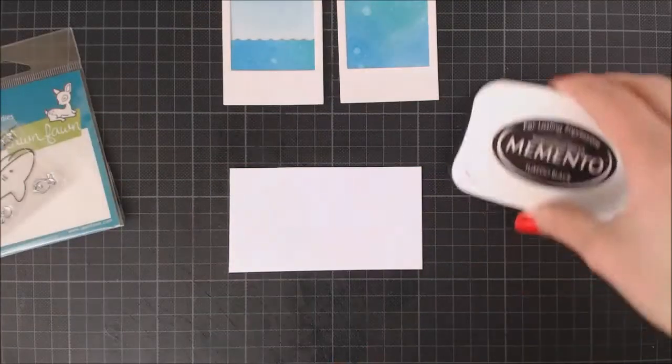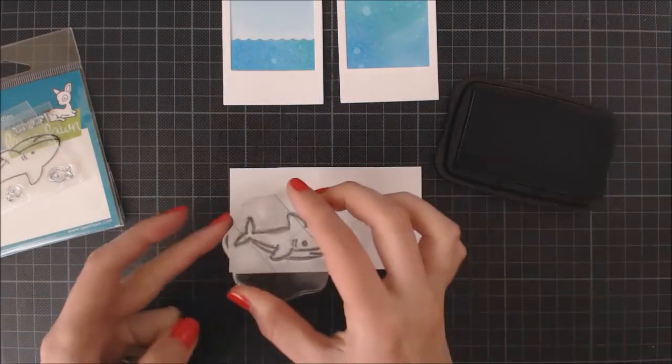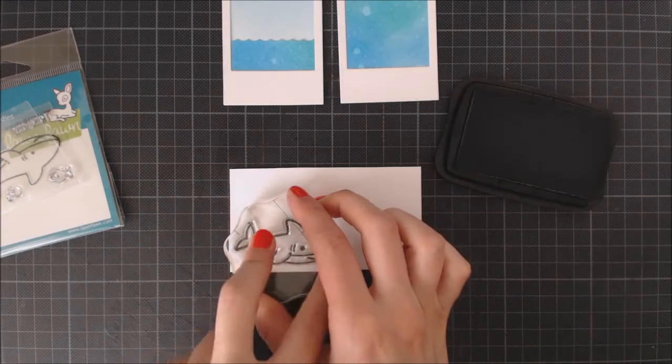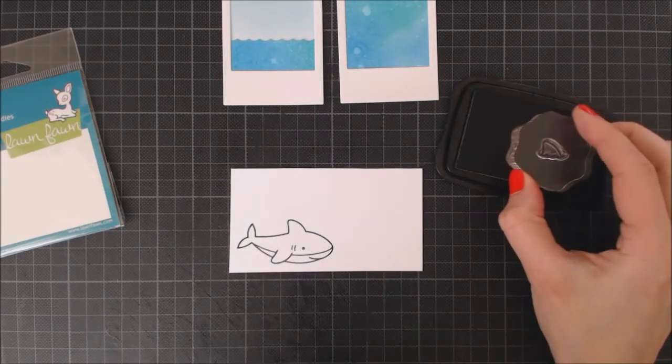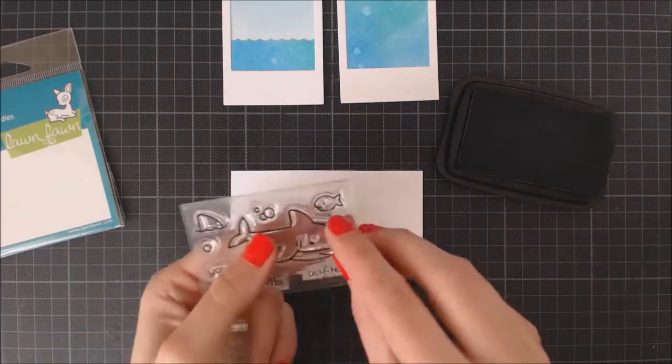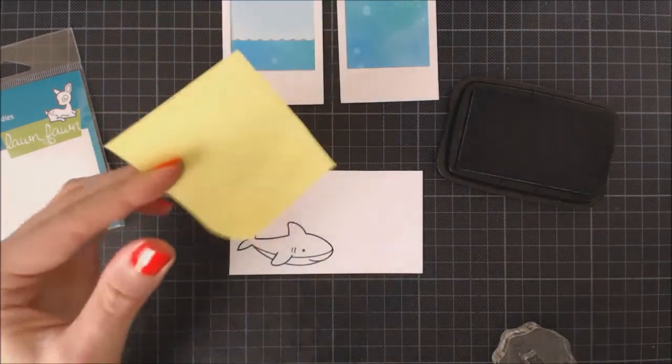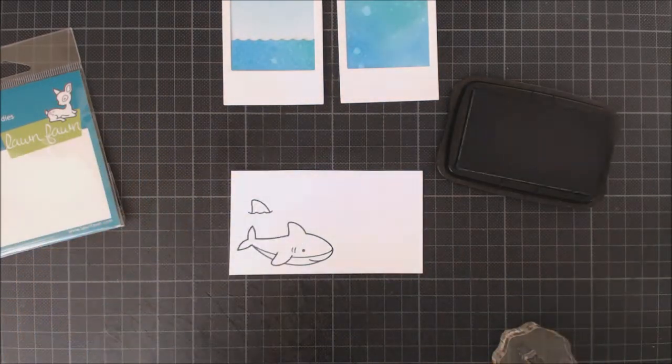I'm going to be coloring the elements of my card with Copic markers, so I'm using this black ink to stamp them because it's Copic friendly. This shark is going to be the dad in my card, and I needed also a baby shark. Because I don't have it, I'm going to customize this little fish included in the set to be my baby shark.